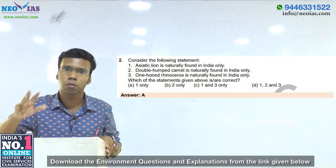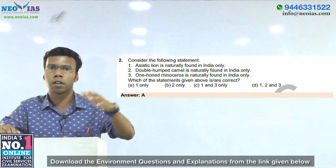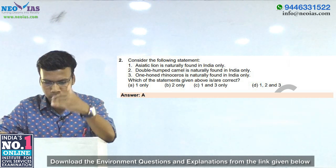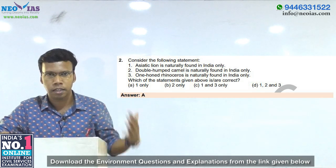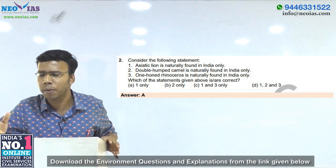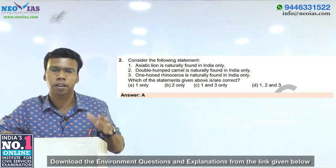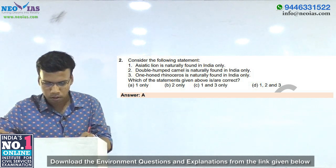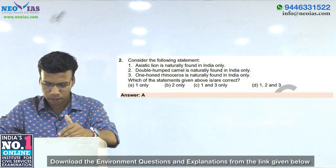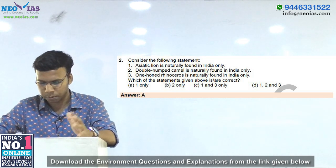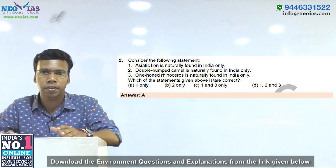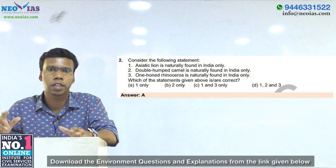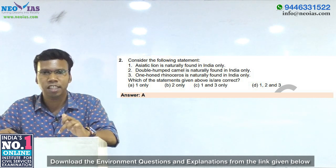The news was about some decline in the population of the double-humped camel. The double-humped camel is found in Mongolia, China, Kazakhstan, Turkmenistan, Uzbekistan, Afghanistan — these regions all have double-humped camels because it is adapted to cold regions. So the second statement — that it is naturally found in India only — is wrong.